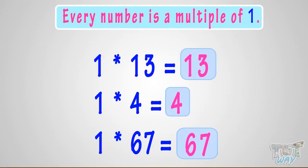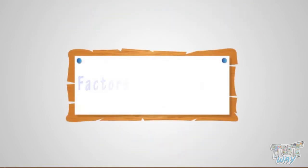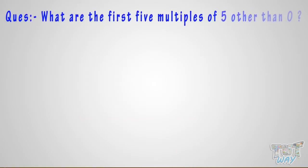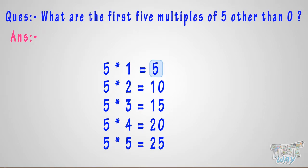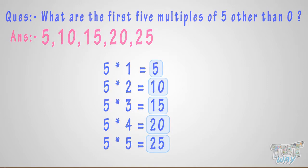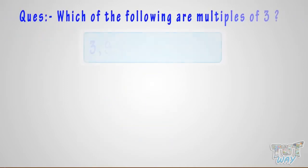So, each and every number is a multiple of 1. Now we know what are factors and multiples. Let's answer a few questions. What are the first 5 multiples of 5 other than 0? The answer is: 5, 10, 15, 20, and 25 are the first 5 multiples of 5 other than 0.